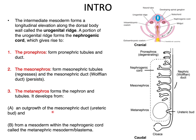The metanephros forms as an outgrowth of the mesonephric ducts — the ureteric bud. So this is an outgrowth of the mesonephric ducts, and then this bud that is outgrowing becomes the ureteric bud. It also forms a mesoderm within the nephrogenic cord called the metanephric blastema or metanephric mesoderm. That is the cloaca.